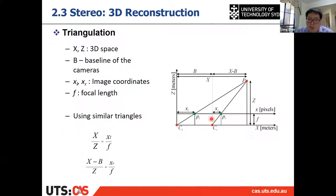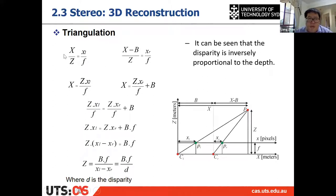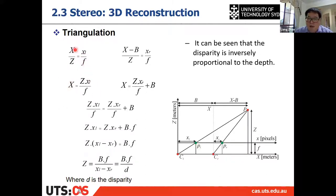From the two images, we have those two equations. The unknowns are X and Z. If we solve for X from the first equation and substitute into the second, we get an equation for Z — the depth of the 3D feature.